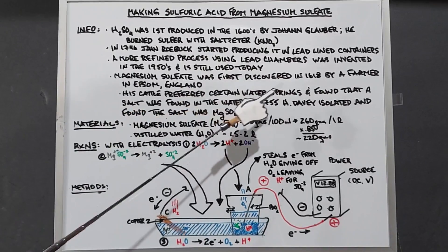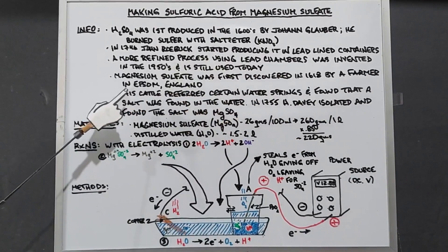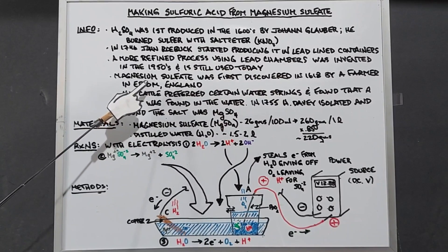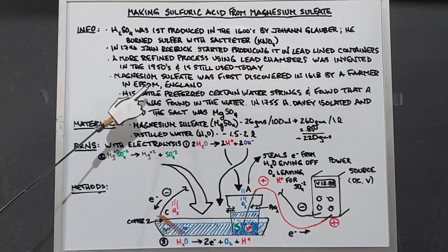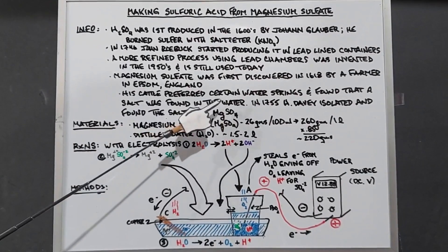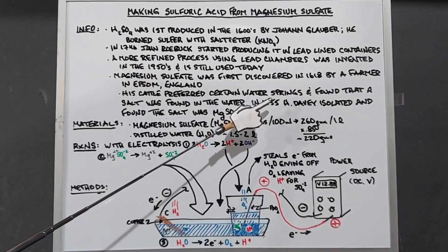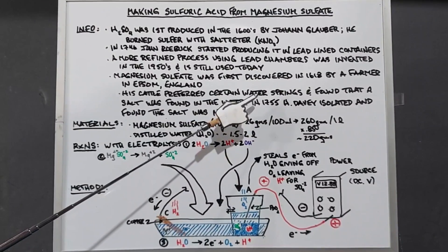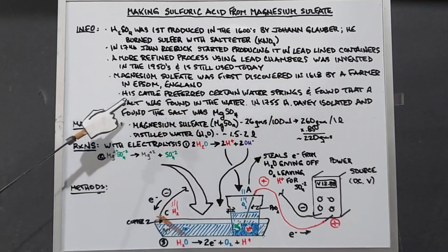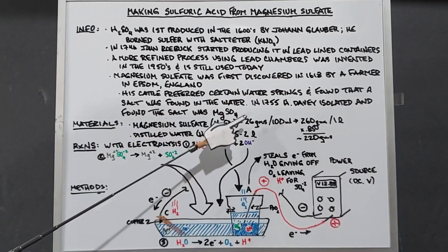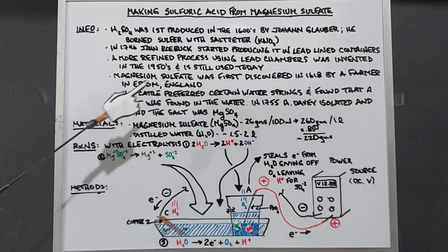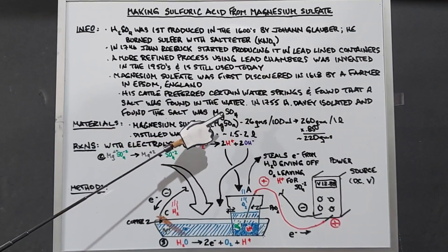Magnesium sulfate was first discovered in 1618 by a farmer in Epsom, England. Epsom salt was named after the city where it was found. This farmer found that his cattle preferred certain water springs and their wounds healed faster after drinking from them. He discovered there was a salt in that water. It wasn't until 1755 that Humphrey David isolated that salt and found it was magnesium sulfate.